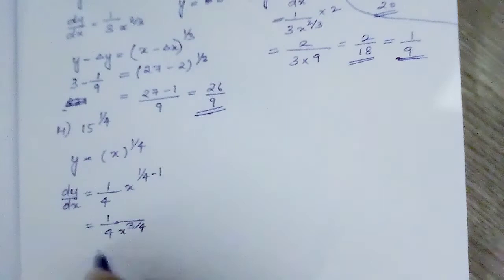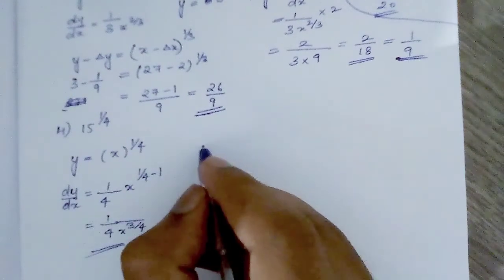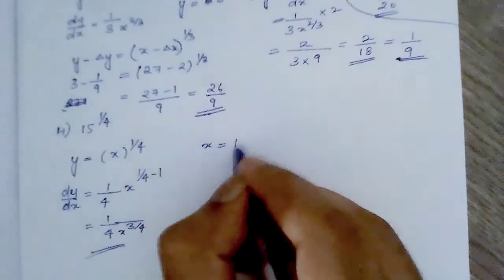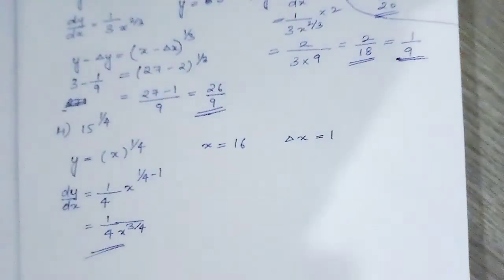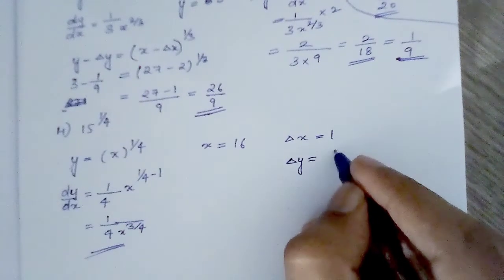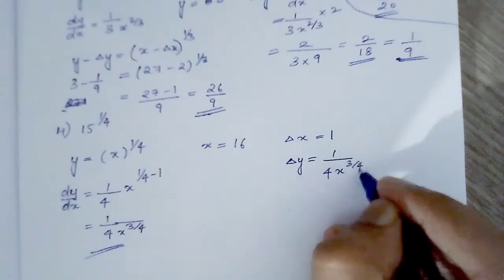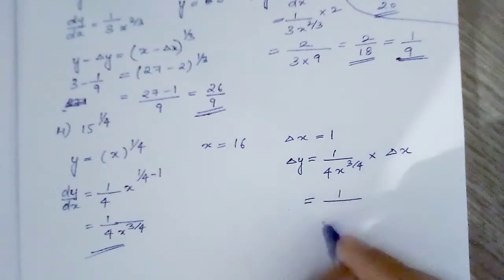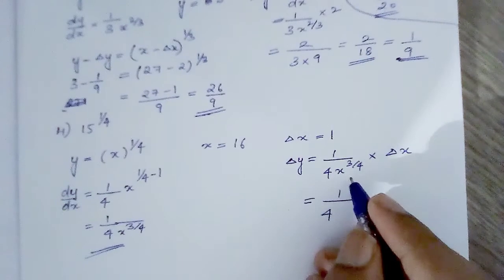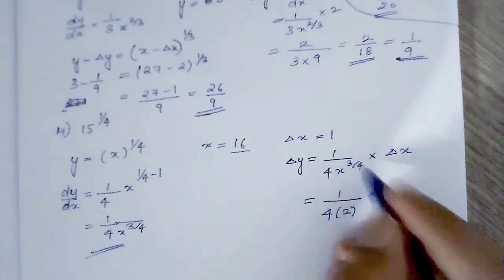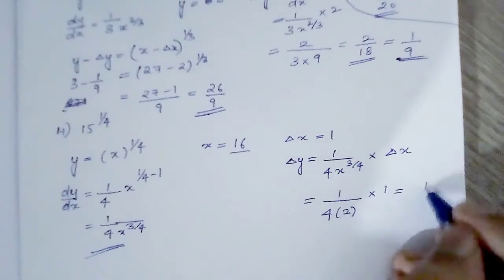We have x is equal to 16 and delta x is equal to 1. Delta y is equal to 1 by 4 x raised to 3 by 4 into delta x. Now x raised to 1 by 4 of 16 is 2, so this becomes 1 by 4 times 2 cubed into 1, giving us 1 by 8.